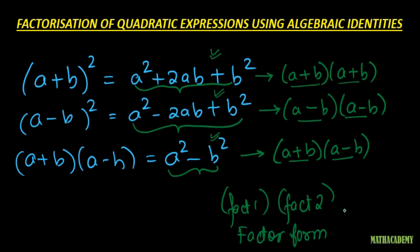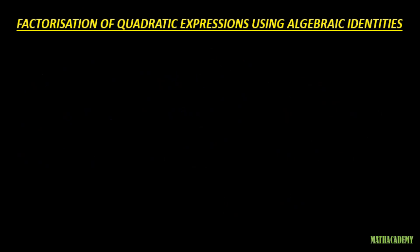Let us move ahead, take an example, and see how we can apply algebraic identities to factorize the given expression. Let us take an expression, say x² + 4x + 4. Before factorizing this expression, there are a couple of things which we need to observe by looking at the expression.